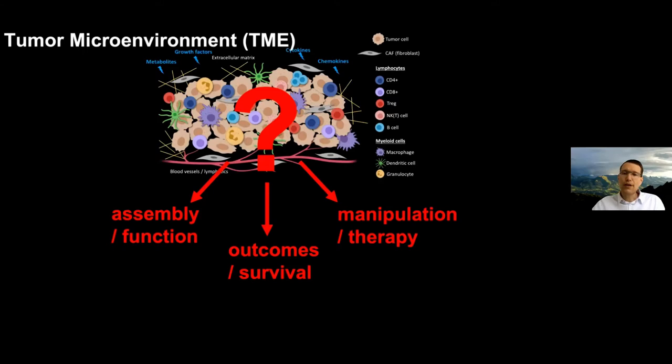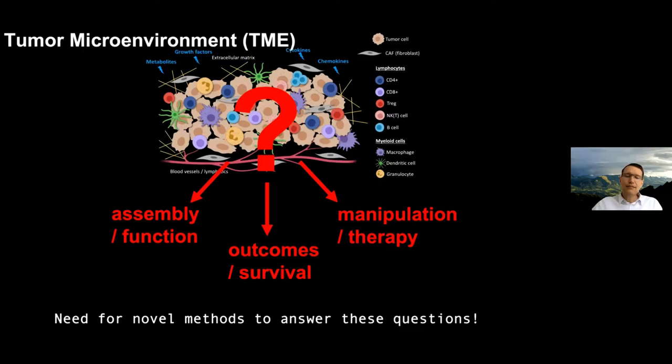The tumor microenvironment has very important implications in tumor immunology and tumor biology. There have been interesting developments in single-cell analysis, such as mass cytometry, high-parameter flow cytometry, and single-cell RNA sequencing. But all these technologies require dissociation of the tumor into single cells, and we lose the spatial information and architecture of the tissue. We want to know more about the architecture to understand how the tumor microenvironment is assembled, to better describe its function, and to learn about cell-cell interactions that are important and predictive in cancer.